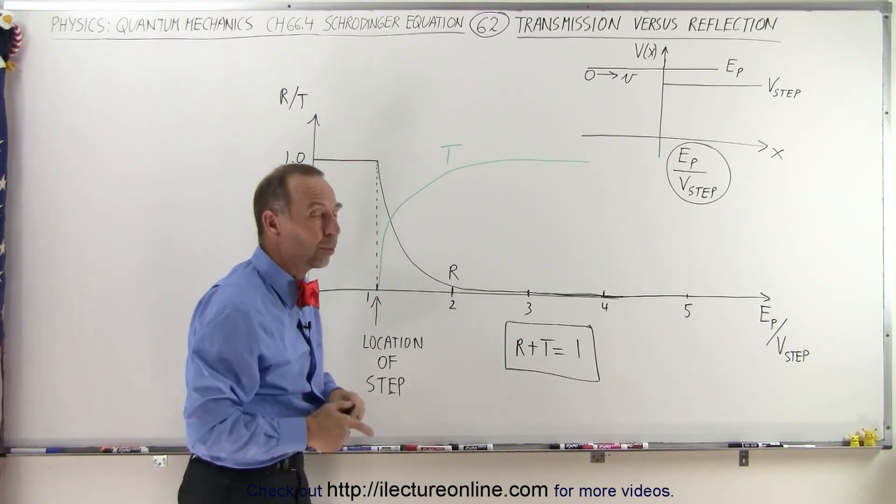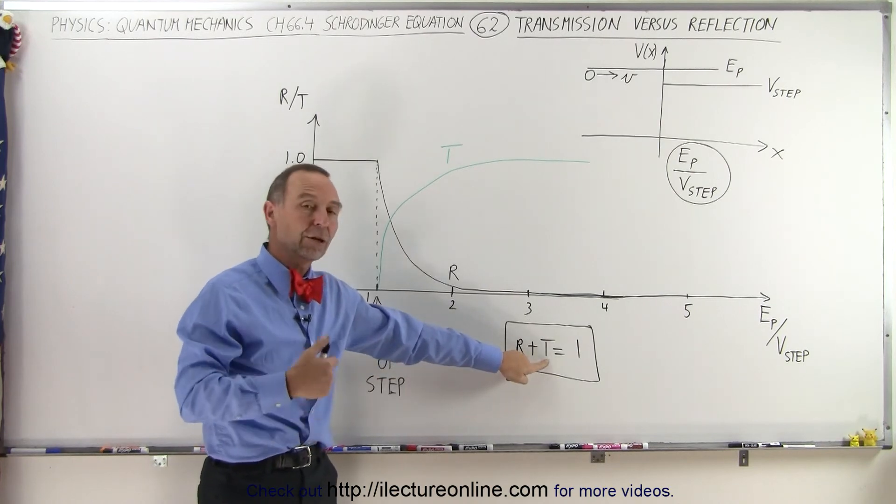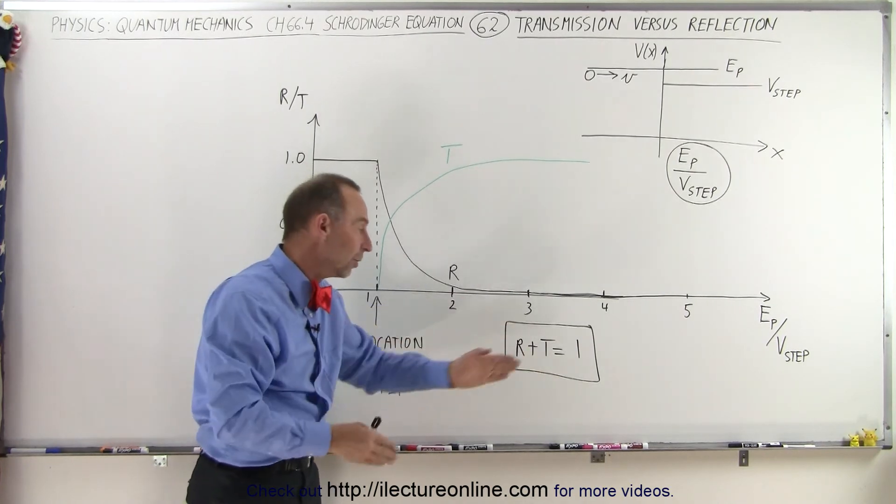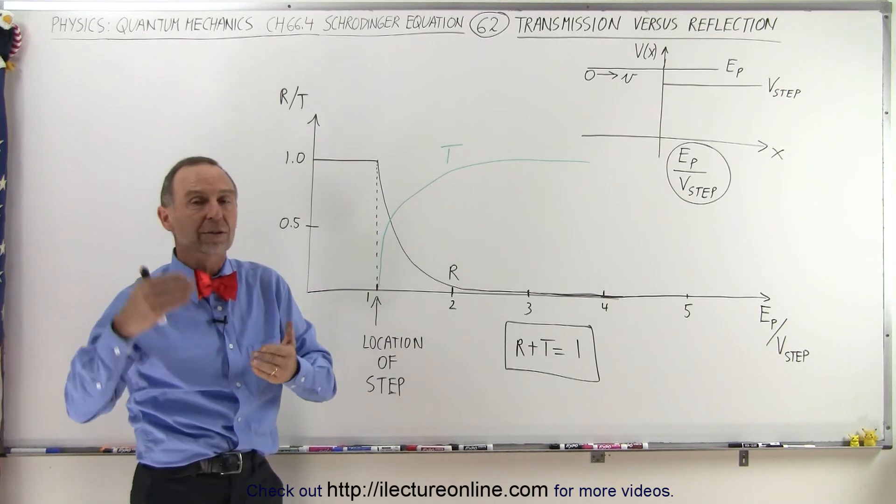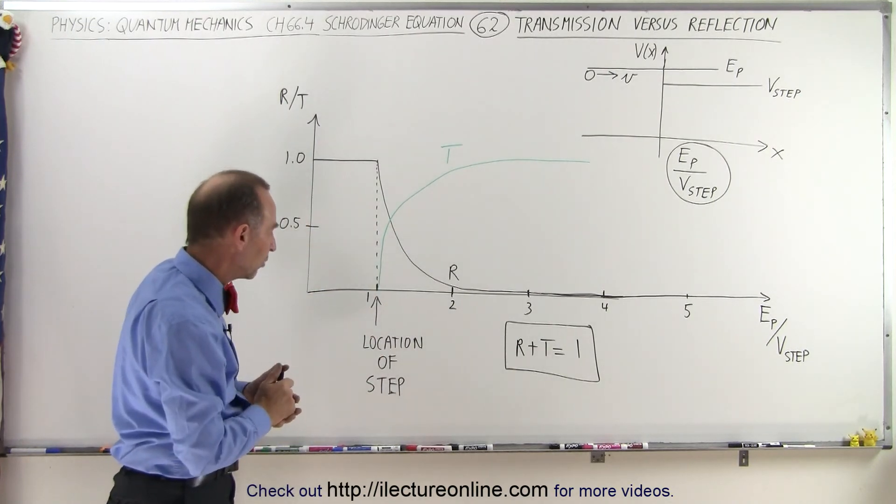And the same with the quantum mechanic effect on particles, that the number of particles reflected and the number of particles transmitted added together will add up to 100% of the particles incident on the barrier or the step, the potential step.